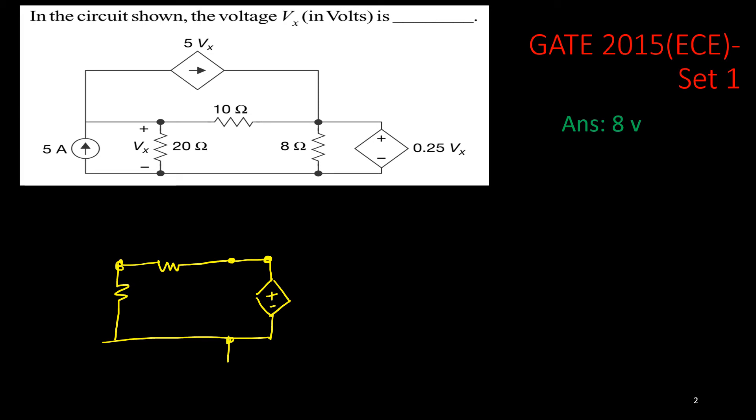And this node, this is grounded. This is your 0.25Vx, and this potential is Vx. This resistance is 20 ohm, this is your 10 ohm.